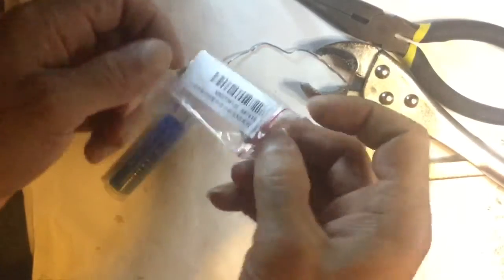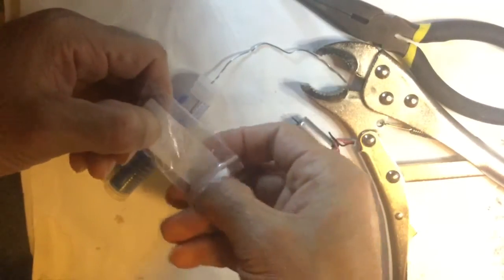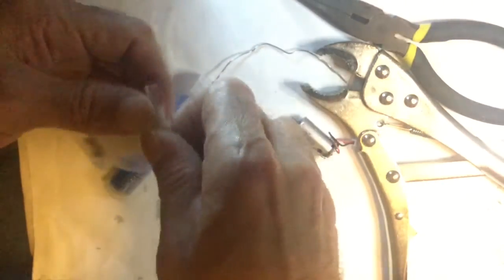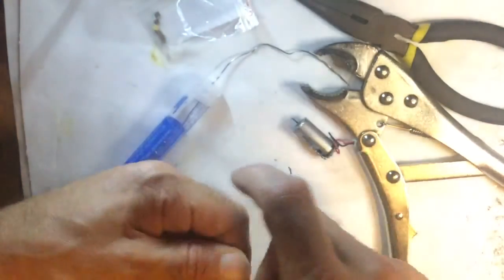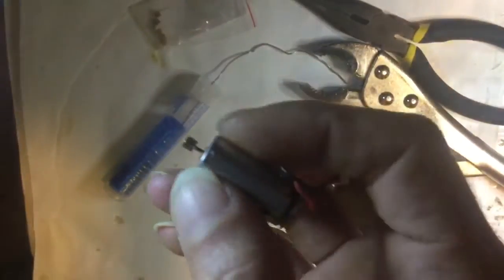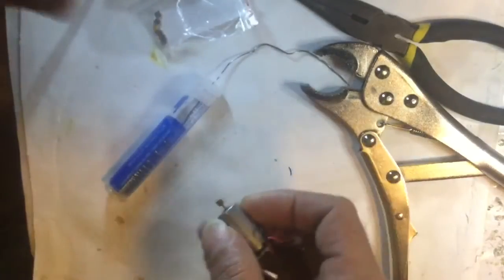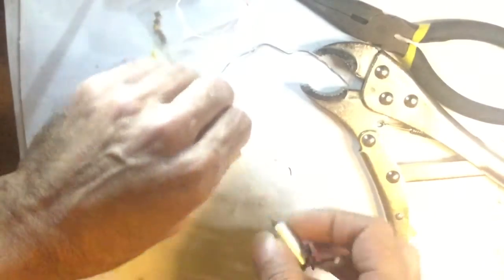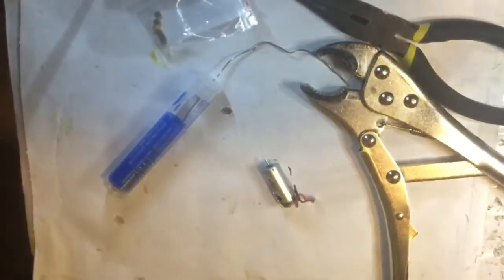So we're going to put the new one in. You're going to notice that it's really, really tight. What we're going to do is put a little bit of crazy glue or super glue, whatever you have, on the tip.